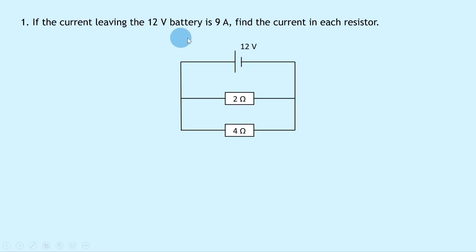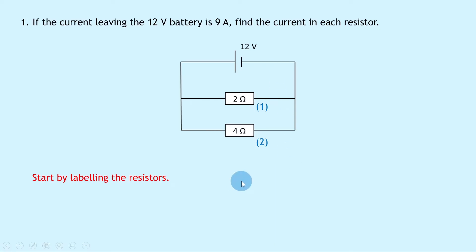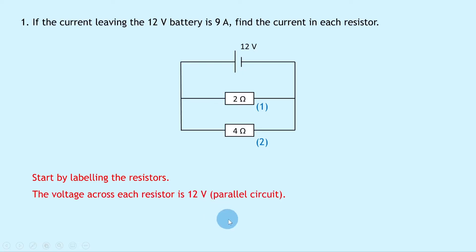Question 1 says that if the current leaving the 12 volt battery is 9 amps, find the current in each resistor. We start by labelling the resistors — the 2 ohm resistor is number 1 and the 4 ohm resistor is number 2. Because it's a parallel circuit, the circuit rule for voltage says that the voltage across each branch equals the battery voltage, so the voltage across each resistor is 12 volts.